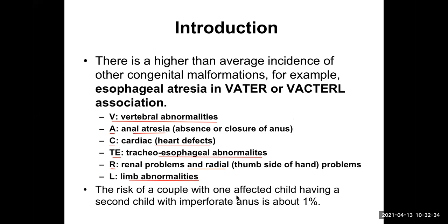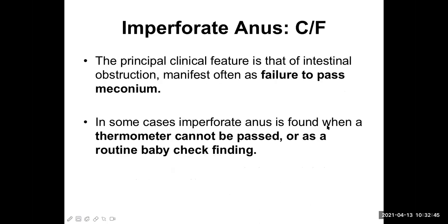The risk of a couple with one affected child having a second child with imperforate anus is about 1%, so the chances are not that high. Now, what are the clinical features? The most important feature is intestinal obstruction, and the baby will fail to pass meconium.